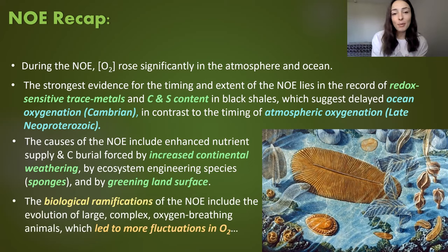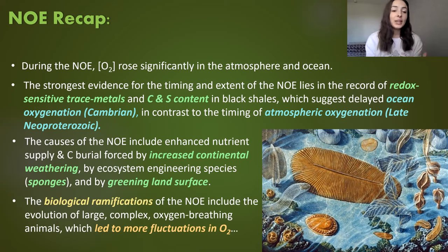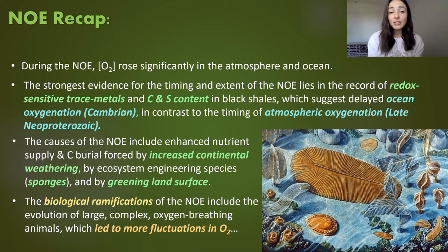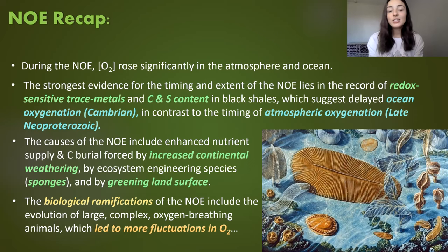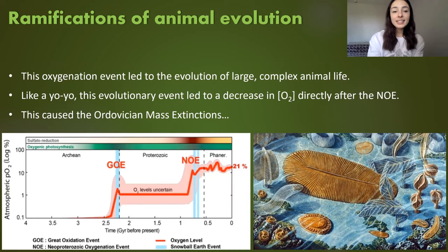To recap the biological ramifications of the NOE: we talked about a major biodiversification of life on Earth and the evolution of large complex oxygen-breathing animals. This kicks off today's discussion because the evolution of oxygen-breathing animals led to even more fluctuations in oxygen during the Paleozoic. This can be seen in the graph showing post-Neoproterozoic oxygen fluctuations.